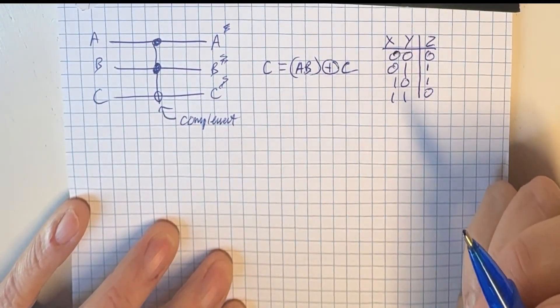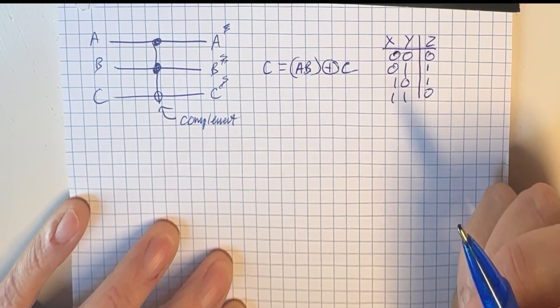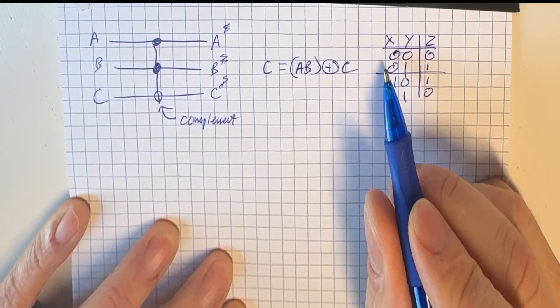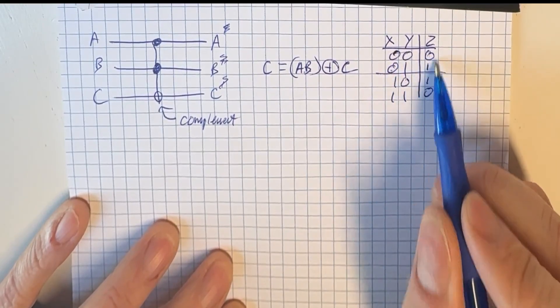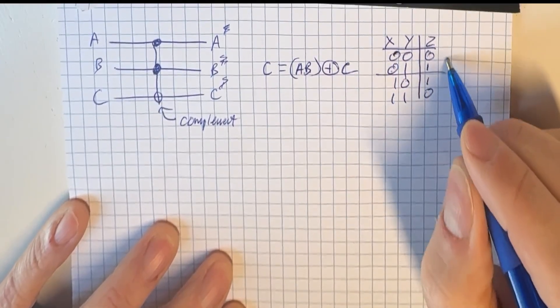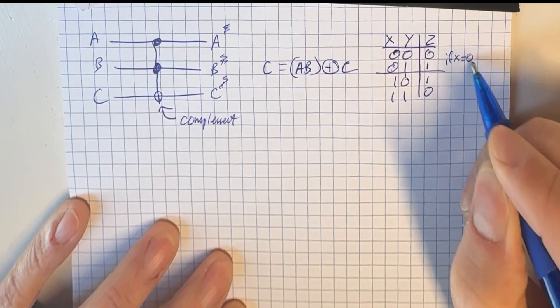This is also, we can call it, controlled complement. If we look at the top half of the truth table, if X is 0, then Z is the same as Y, right? If X equals 0.